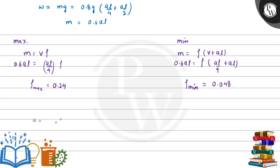Hence, the maximum reading for this hydrometer is 0.24 and minimum reading for this hydrometer is 0.048. I hope you understood the explanation. All the best.